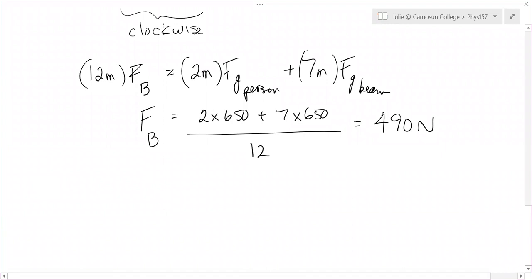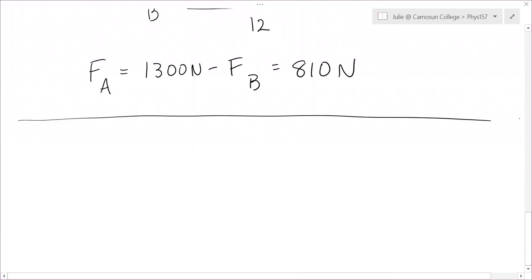And then now we may as well go back to equation one, where FA plus FB was 1300. So FA must be 1300 minus FB. So 1300 minus 490 gives us 810. So those are the two forces in the beam. That's question one.